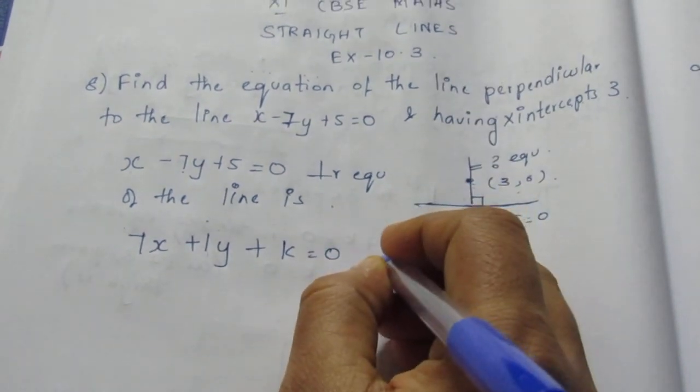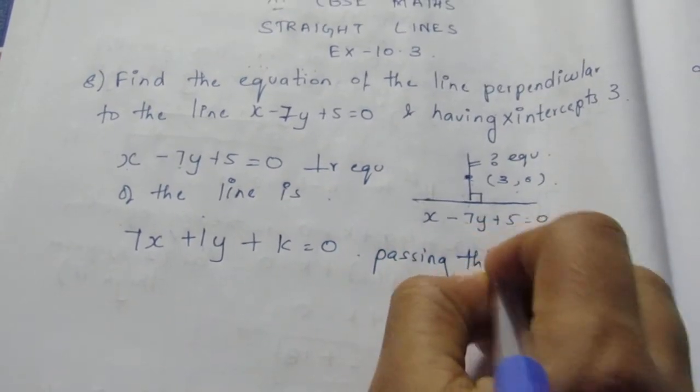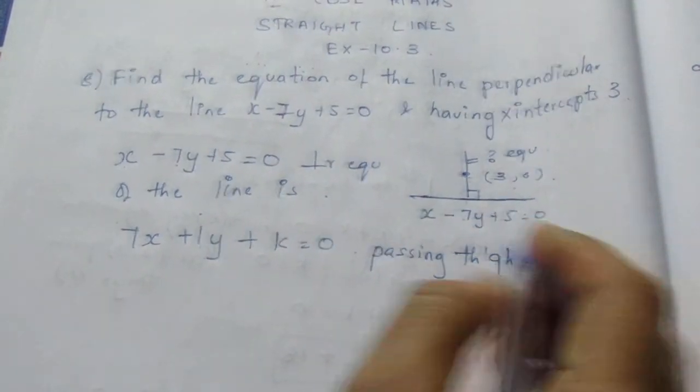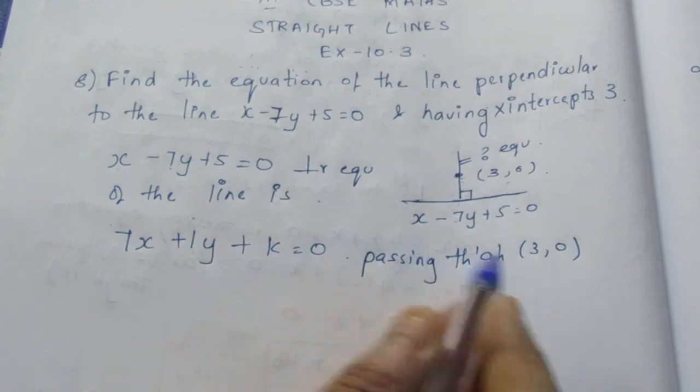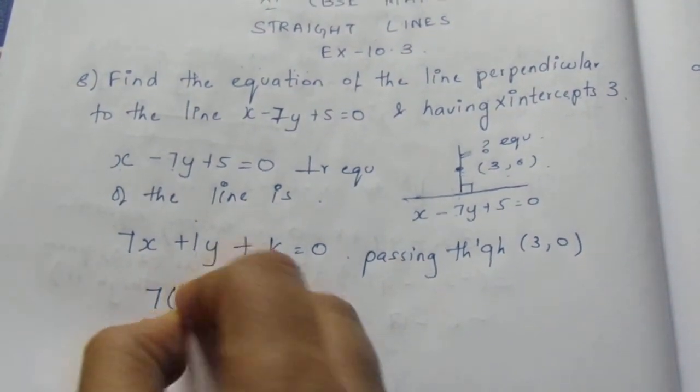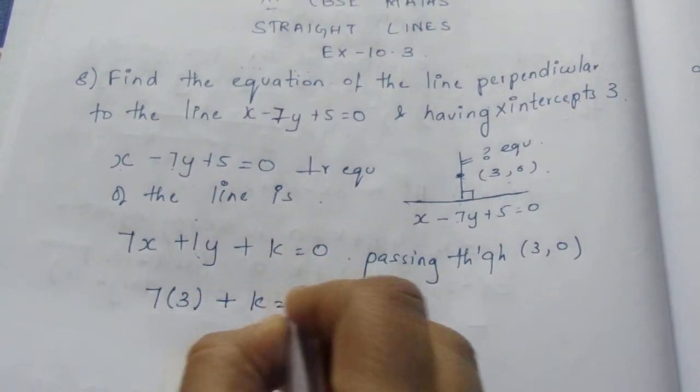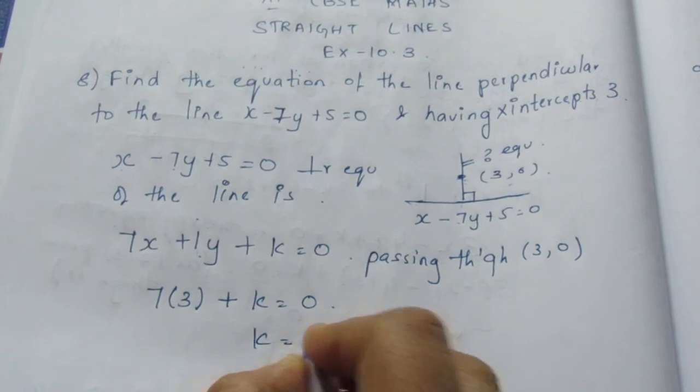So, passing through (3, 0), substitute instead of x and y the value of 3 comma 0. So it becomes 7 into 3 plus 1 into 0, which will become 0, plus k equal to 0. So k equal to minus 21.